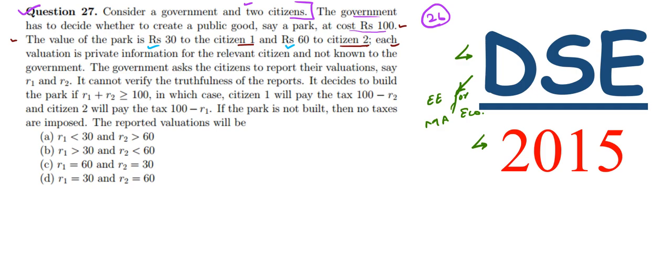The government asks the citizens to report their valuations, say R1 and R2. R1 is the valuation of citizen 1 and R2 is the valuation of citizen 2. We have been given R1 is rupees 30 and R2 is rupees 60.